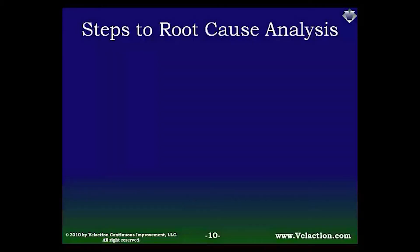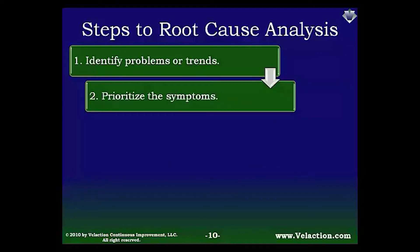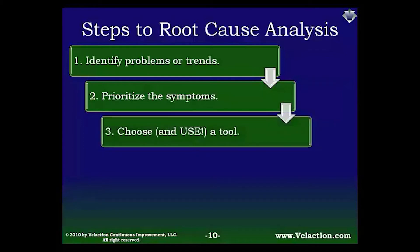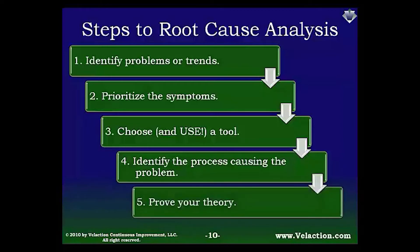Now we know what root cause analysis is and why it is important — the question is how to do it. The first step is recognizing that there is a problem or trend. After you see the problems, you have to prioritize them against each other, and prioritize the symptoms within each problem. Steps 2 and 3 blend a bit: some tools help with prioritization, but step 3 is about planning — taking a systematic approach to problem solving to reduce errors. The point of the tools is to find the specific process step that is the source of the problems. Finally, you should check your work, like the Deming cycle, to make sure you are right before taking action.